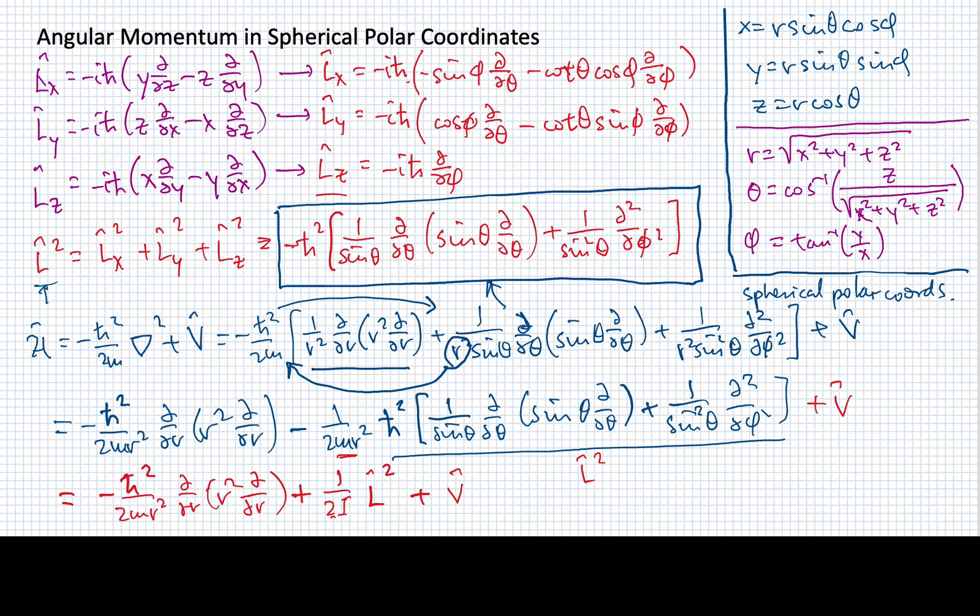So you can see that for these kinds of systems, the Hamiltonian now turns out to be a relatively simple-looking operator, as long as we're comfortable with dealing with angular momentum. And I hope we are, because we're going to see a lot more of it in the coming lessons.